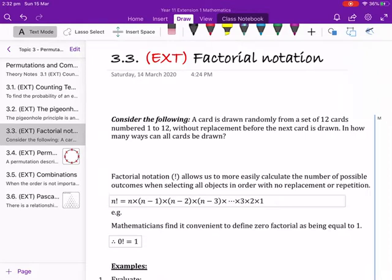Consider the following. A card is drawn randomly from a set of 12 cards numbered 1 to 12 without replacement before the next card is drawn. In how many ways can all cards be drawn?